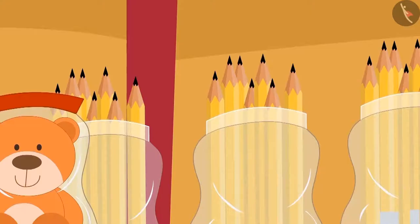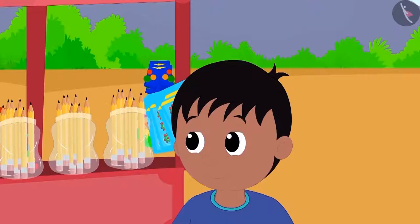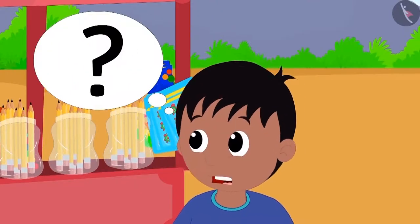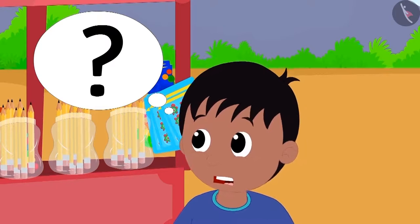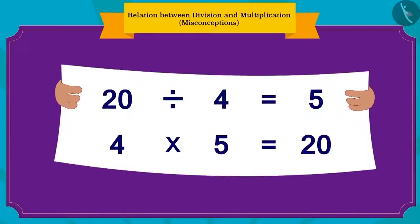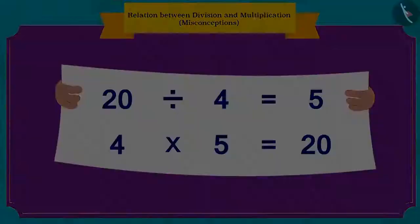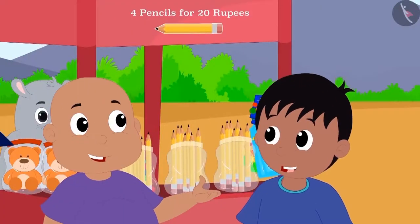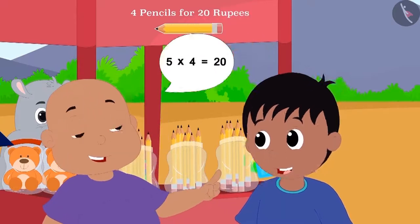Bablu quickly handed 5 rupees to Gagu and bought the pencil. Raju was amazed at how fast Bablu had calculated the answer. Then Bablu wrote these division and multiplication equations for Raju. He told Raju that he found the answer for division by using multiplication.